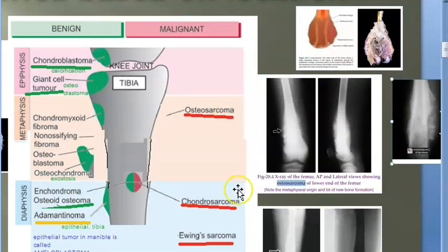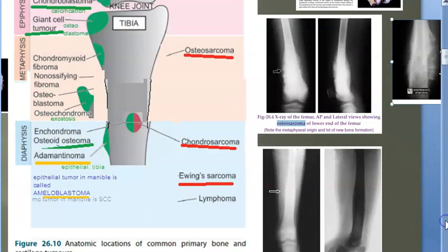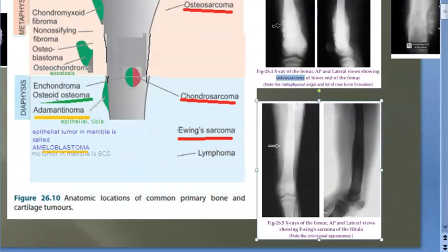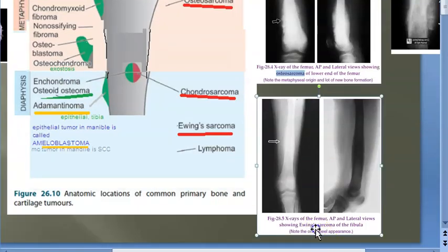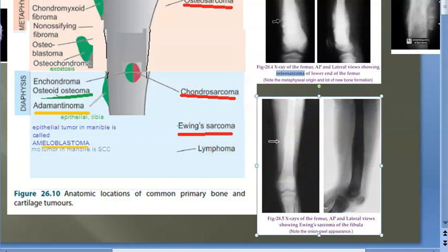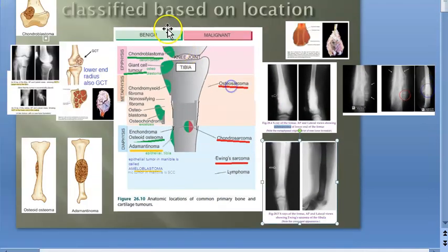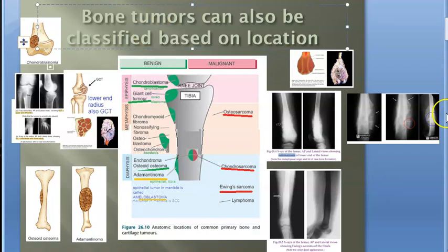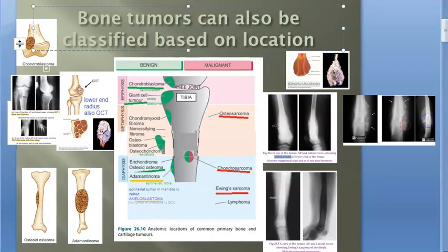Here are X-ray images of osteosarcoma. Coming down, this image shows Ewing's sarcoma — it also affects the diaphysis and is a very aggressive tumor with onion peel appearance.